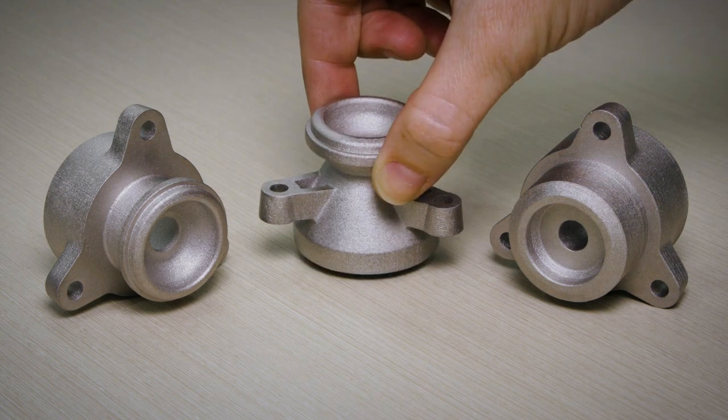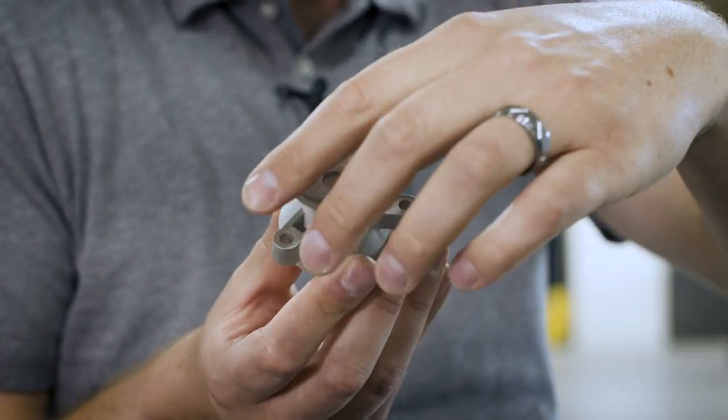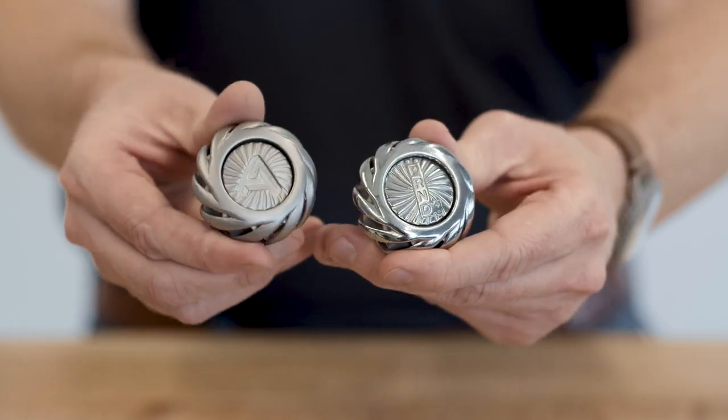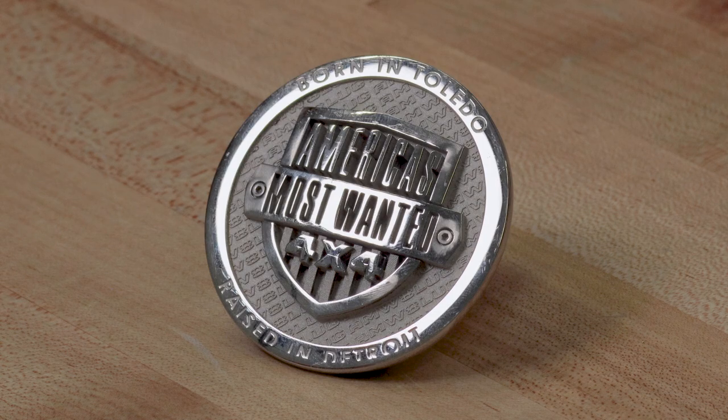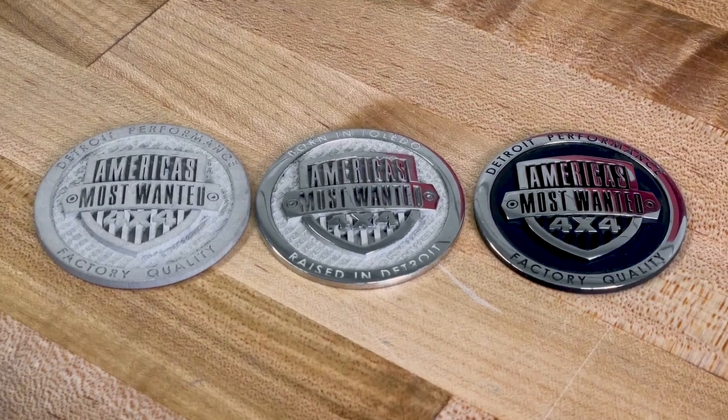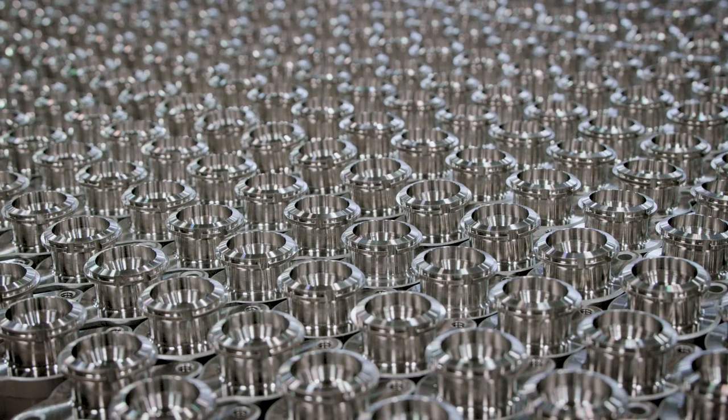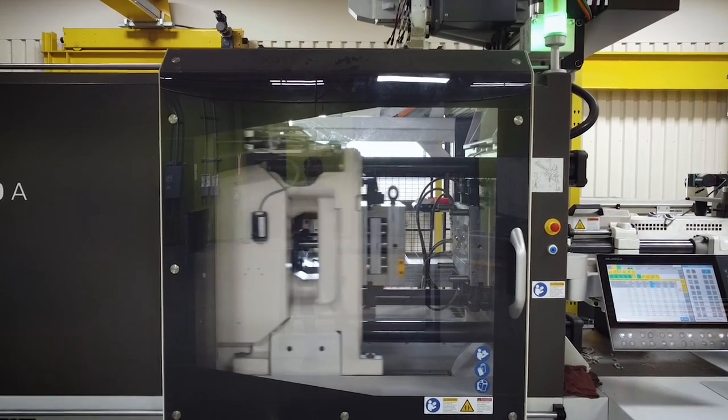Parts produced by Desktop Metal's metal binder jetting process can be machined, polished, plated, or otherwise post-processed exactly the same as metal parts produced by other traditional manufacturing processes, like metal injection molding.